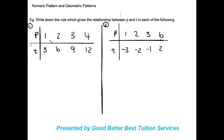If we look at our p values, we have 1, 2, 3, 4. Our t values are 3, 6, 9, and 12. What is the relationship between these p values and their corresponding t values? We're going to start with the first p value of 1, and our first t value is 3. So what can we do to 1 to get to 3? We can multiply by 3.